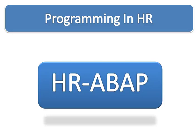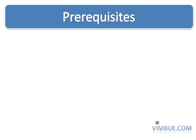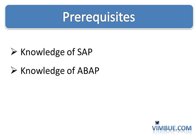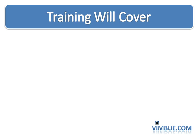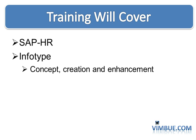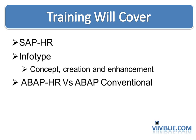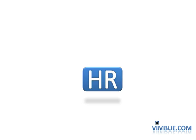Hello everybody. This session is about programming in HR, which is called HR ABAP or ABAP HR at times. The prerequisites for this training are knowledge of SAP, and good to have is knowledge of ABAP. The training is going to cover the introduction to the HR module of SAP, introduction to infotypes — its concept, creation, and enhancement — and why and how ABAP HR is different from conventional ABAP.